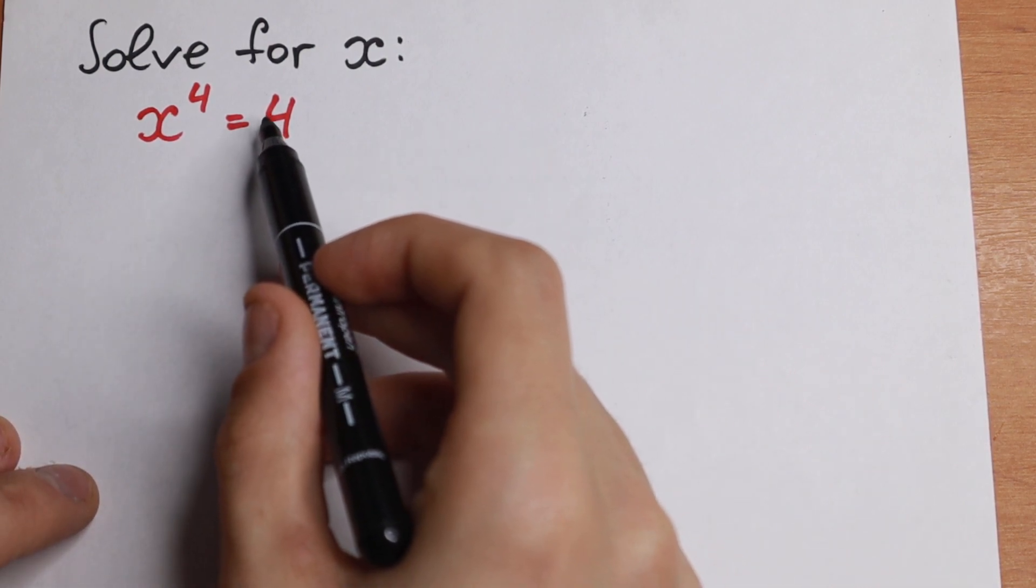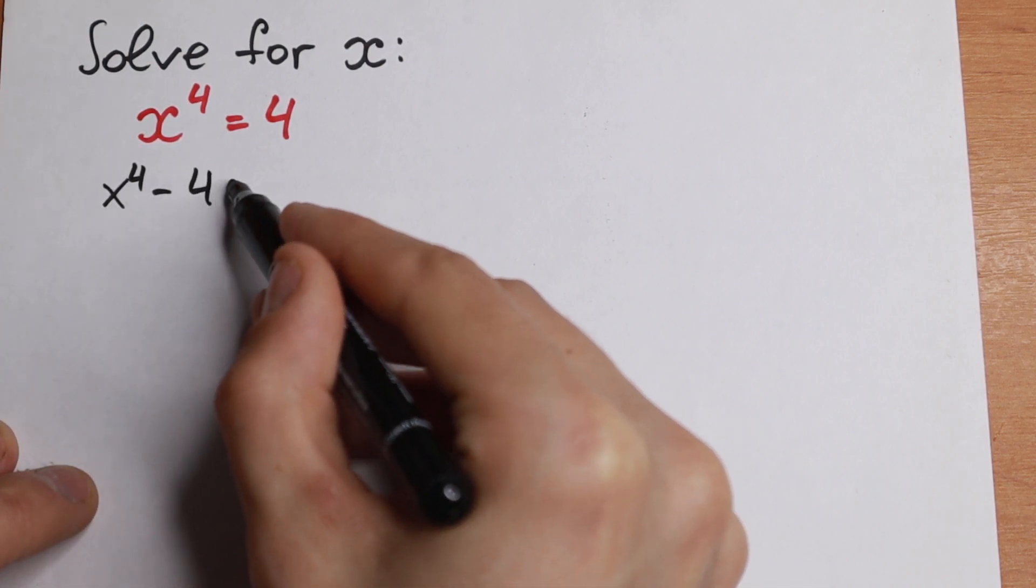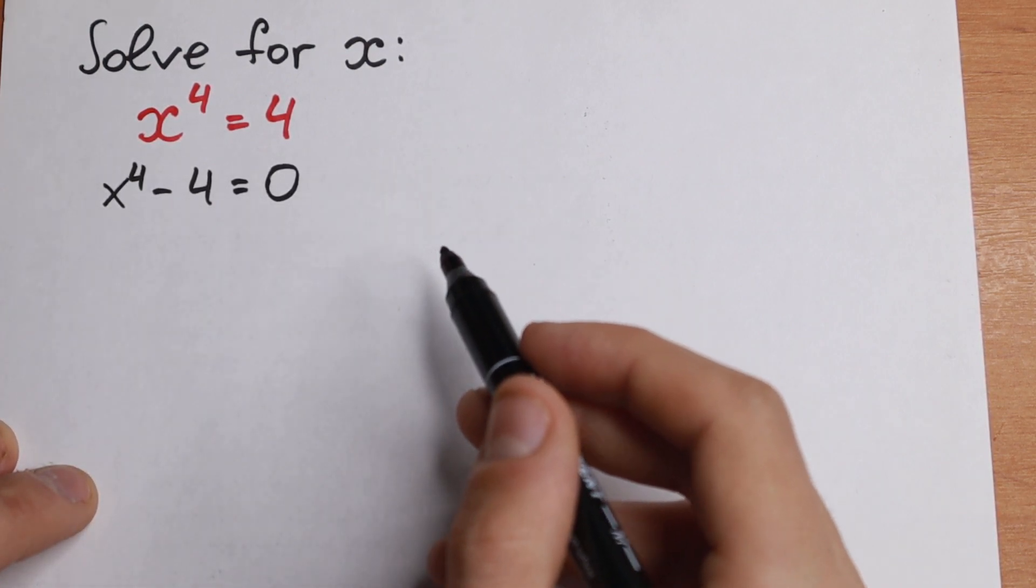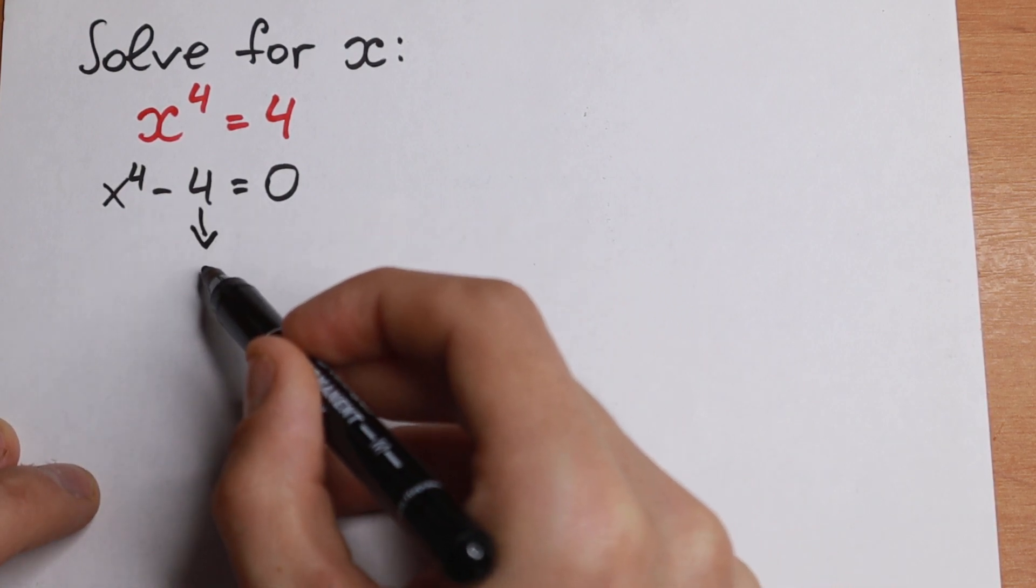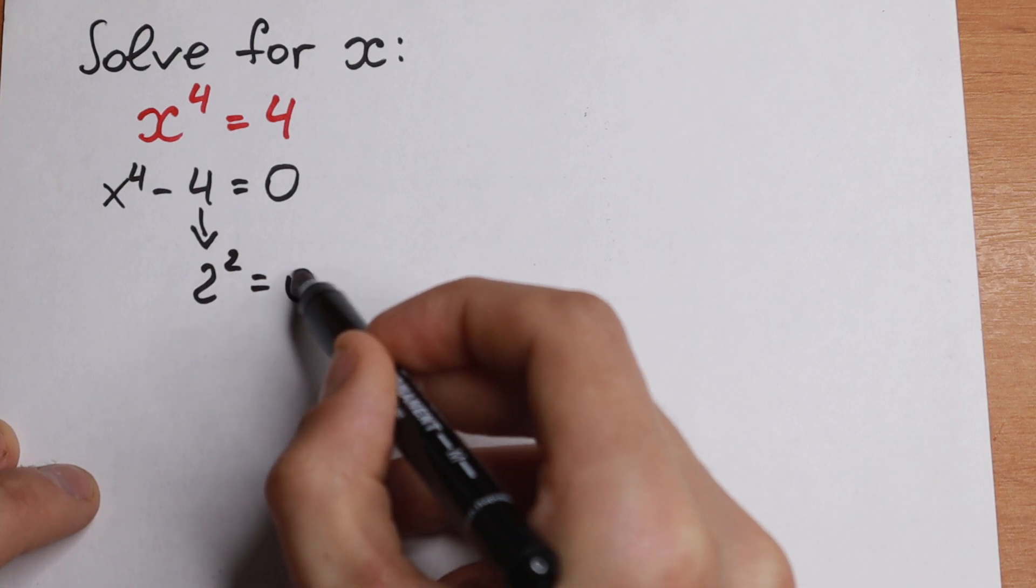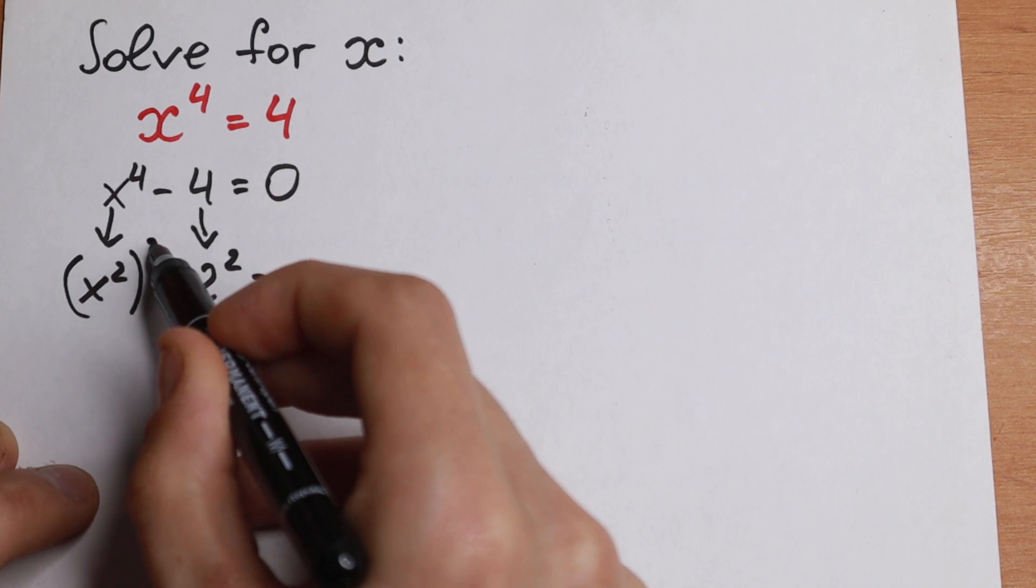First of all let's bring this 4 on the left. We will have x to the fourth power minus 4 equal to 0. And as you can see right here we can write this 4 as 2 squared. And this x to the fourth power we can write as x squared to the second power.